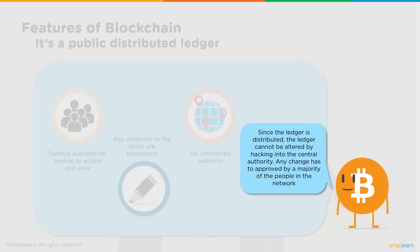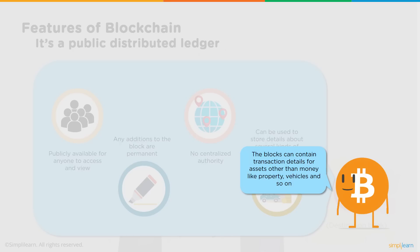There is no centralized authority since the ledger is distributed. Any change has to be approved by the majority of the people in the network, and therefore there are algorithms for proof of consensus. A consensus algorithm exists in any blockchain network where the majority of stakeholders have to approve the transaction. Blockchain can also contain transaction details for assets other than money — like property, vehicles, farming products, or any asset you want to trace in supply chain, retail, and other industries.